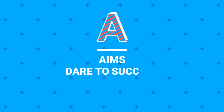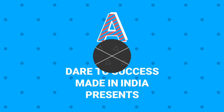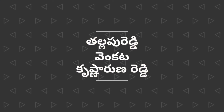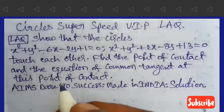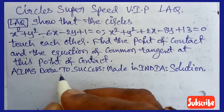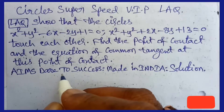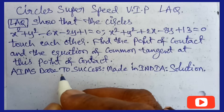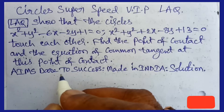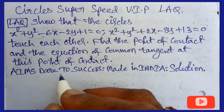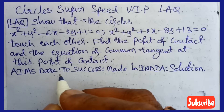Hi, Hello, Namaste. Welcome to AIM's Dare to Success YouTube channel. Today I want to discuss with you circles super speed — a very important previous VIP long answer question. Show that the circles x² + y² - 6x - 2y + 1 = 0 and x² + y² + 2x - 8y + 13 = 0 touch each other. Find the point of contact and the equation of common tangent at their point of contact.